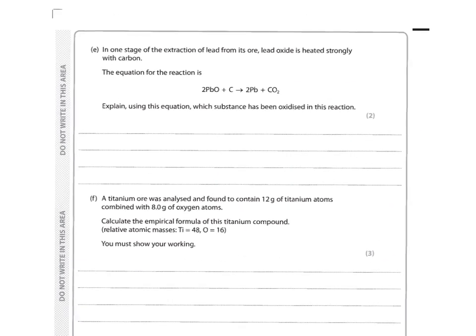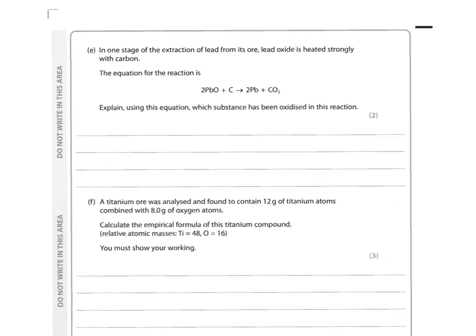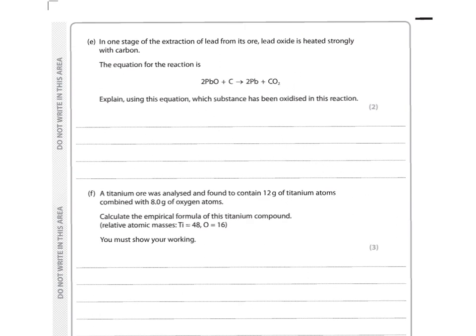In one stage of the extraction of lead from its ore, lead oxide is heated strongly with carbon. The equation is: 2PbO + C → 2Pb + CO₂. Explain which substance has been oxidised: the carbon turns into carbon dioxide by gaining oxygen. So carbon has been oxidised as it gains oxygen. Remember, the definition for oxidation is gaining oxygen. Lead oxide has been reduced because it loses oxygen.